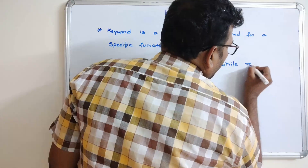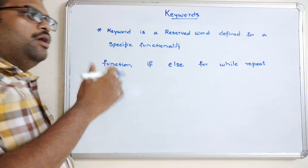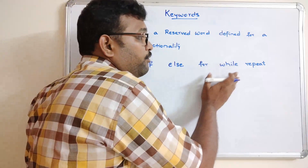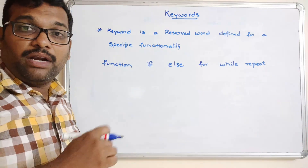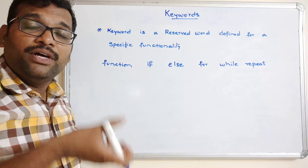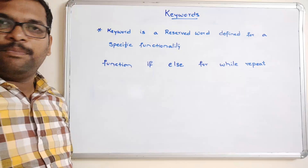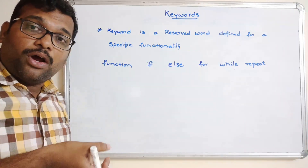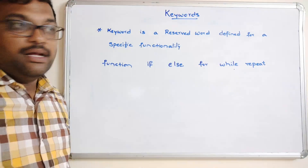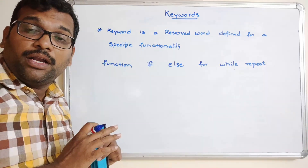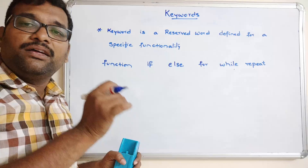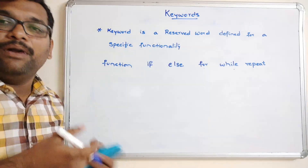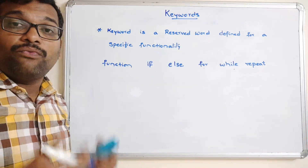All three — 'for', 'while', and 'repeat' — come under the control structures as iterative statements. If you want to repeatedly execute some set of statements, we use iterative statements. For 'for' and 'while', we need to write a condition and the repetition will stop whenever the condition becomes false. Whereas 'repeat' does not take a condition directly — it simply repeats the following statements multiple times. So the question is: when will it stop?